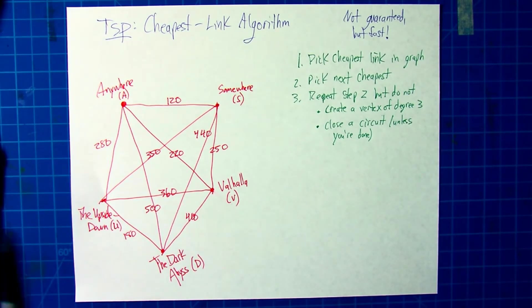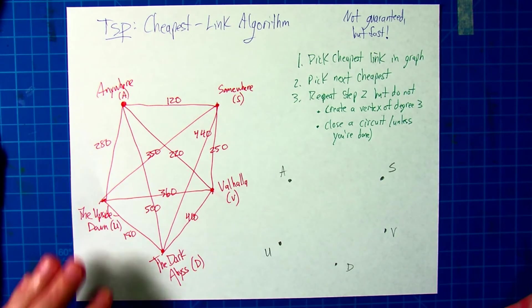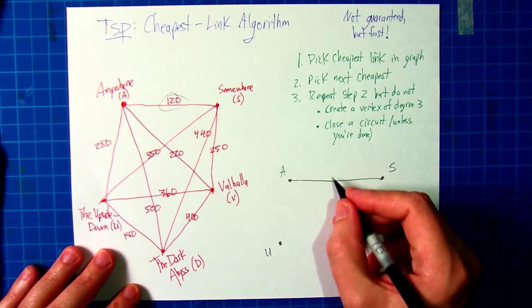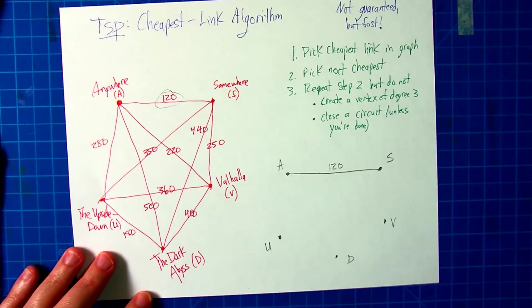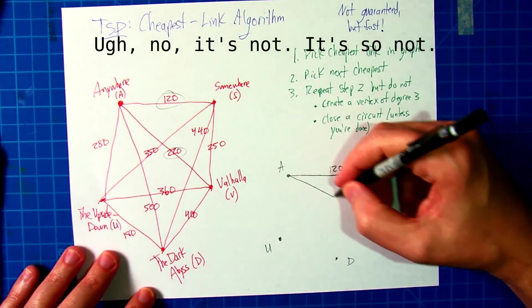So the way that works is we're going to draw just our vertices. Now, let's pick the cheapest link. 120 is the cheapest one in that whole graph, so we'll put this in at 120. Now, let's pick the next cheapest one. The next cheapest is 220, so we will add that one in.